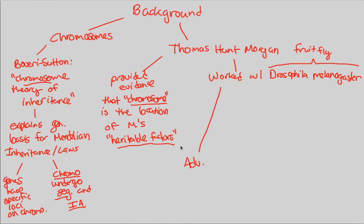Just like the pea plant had its advantages, in a lab environment the Drosophila melanogaster had the following advantages. First, in one mating event you were able to get hundreds of offspring. That's important because you're studying genetics — passing on of traits and characteristics — so it makes sense to get lots of observable traits passed on through just one single mating event, rather than going through a hundred mating events to get a hundred offspring like you would have to in humans.